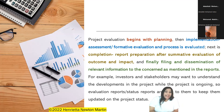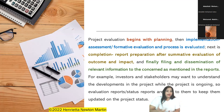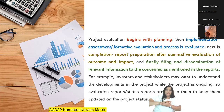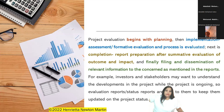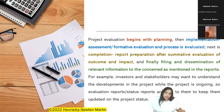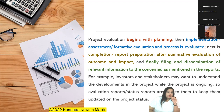Project evaluation begins with planning, then implementation and assessment — formative evaluation at the initial stage where the process is evaluated. Next is the completion report preparation stage after summative evaluation — overall, holistic evaluation of the outcome and impact. That is maximization of outcomes: how best you could really deliver the project, the best outcome — maximizing. The goal of evaluation is to maximize outcomes, to concentrate on the vision and the provision in order to maximize the outcome and impact. For that, you strategize.